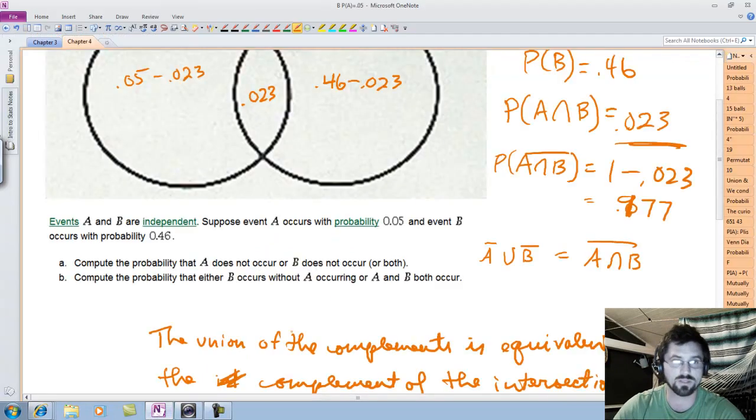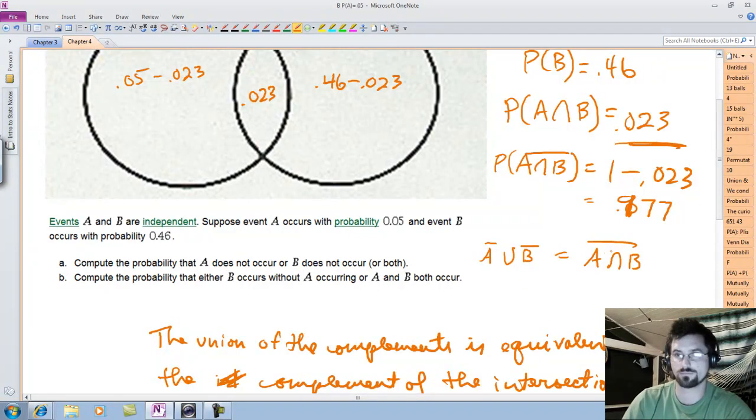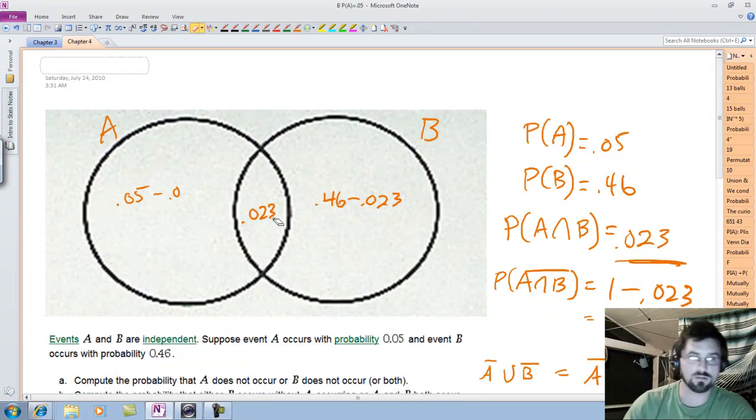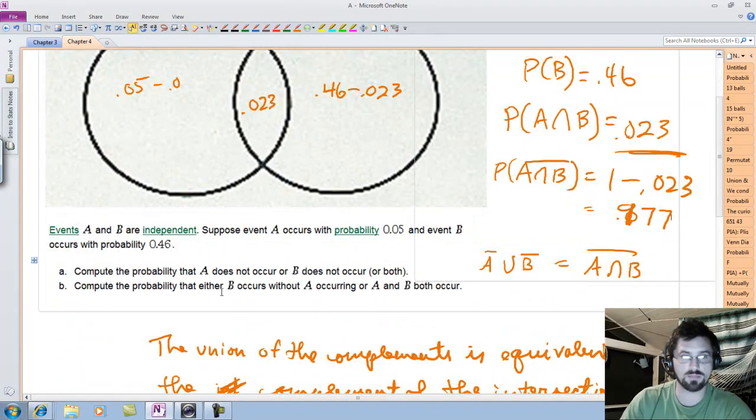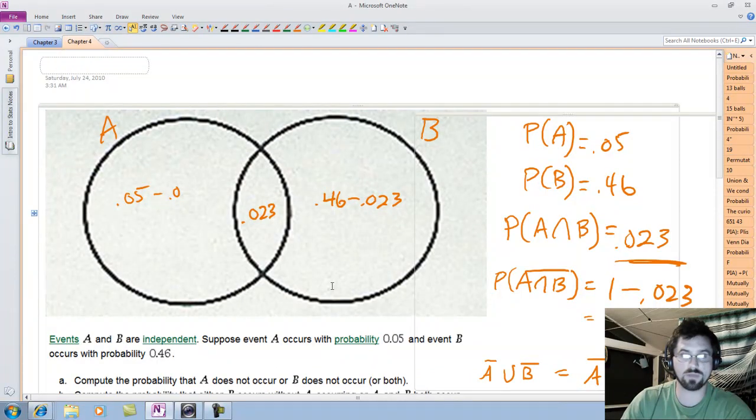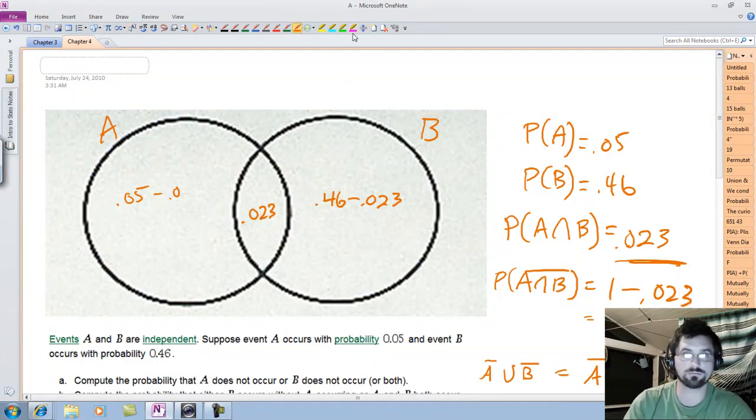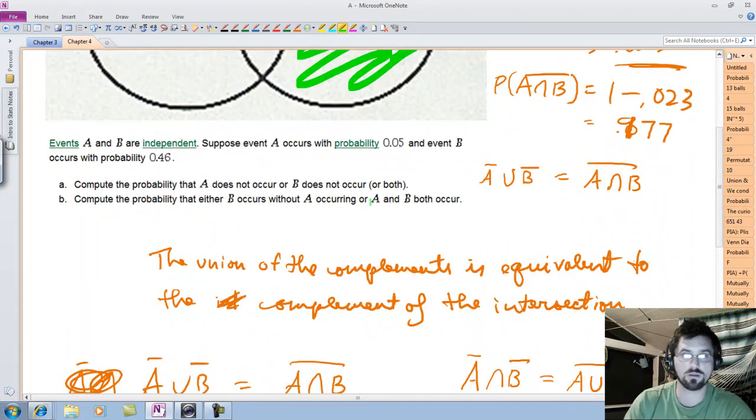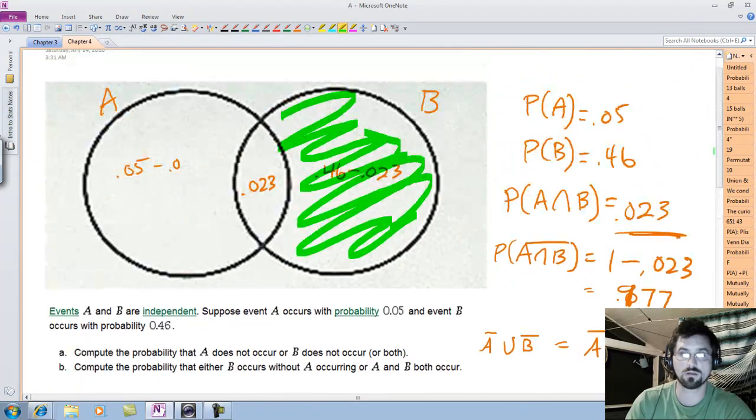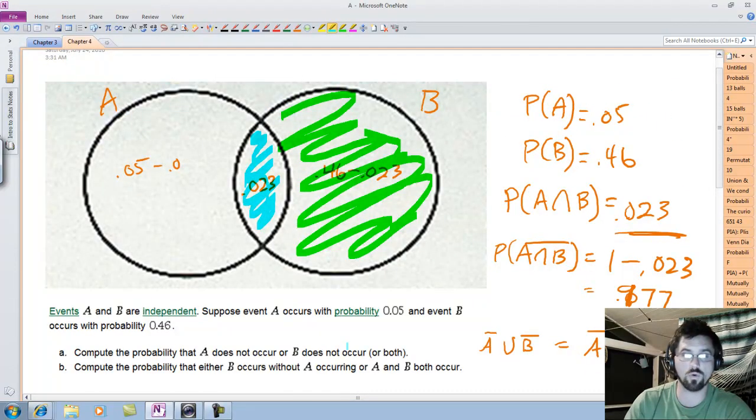I can show that to you really quickly. If I can find my pen and scroll up. There we go. Okay, so they want to know the probability that B occurs without A. Well, where does B occur without A? In region 3. So this is B occurring without A, this region here. And then they ask, where does B occur with A, where they both occur? Well, that's this region over here. And because it's an or, we unite them, and what do we get back? We get back B. So the answer is, what was B? .46. Super easy.